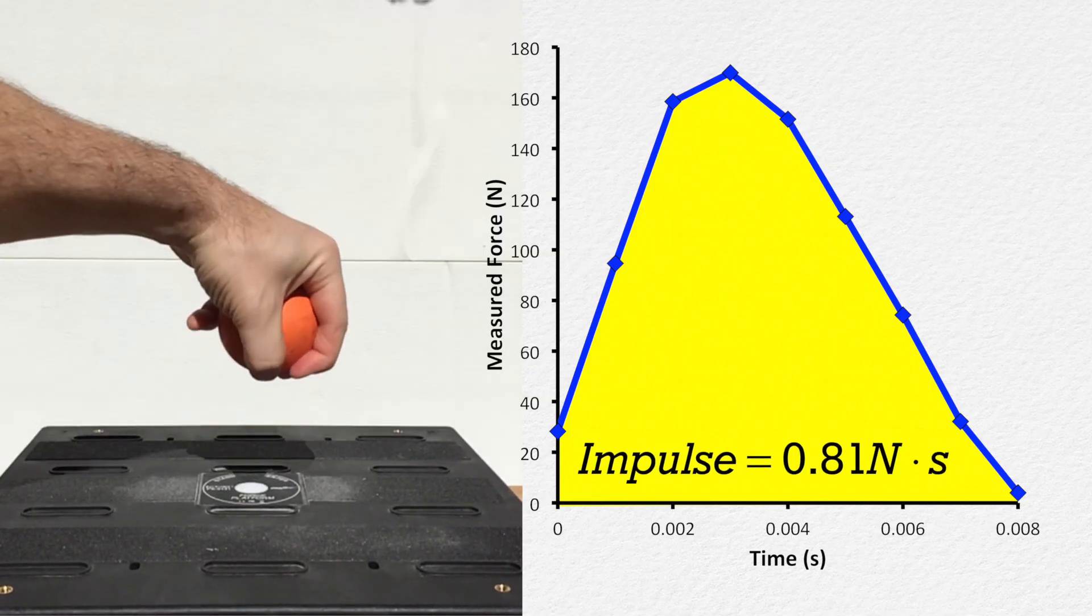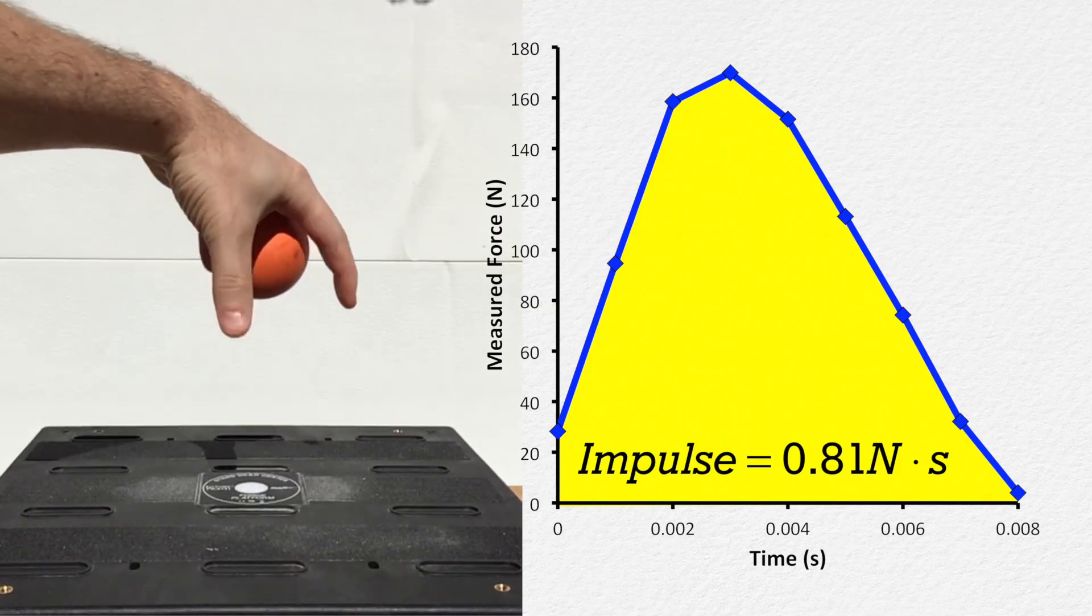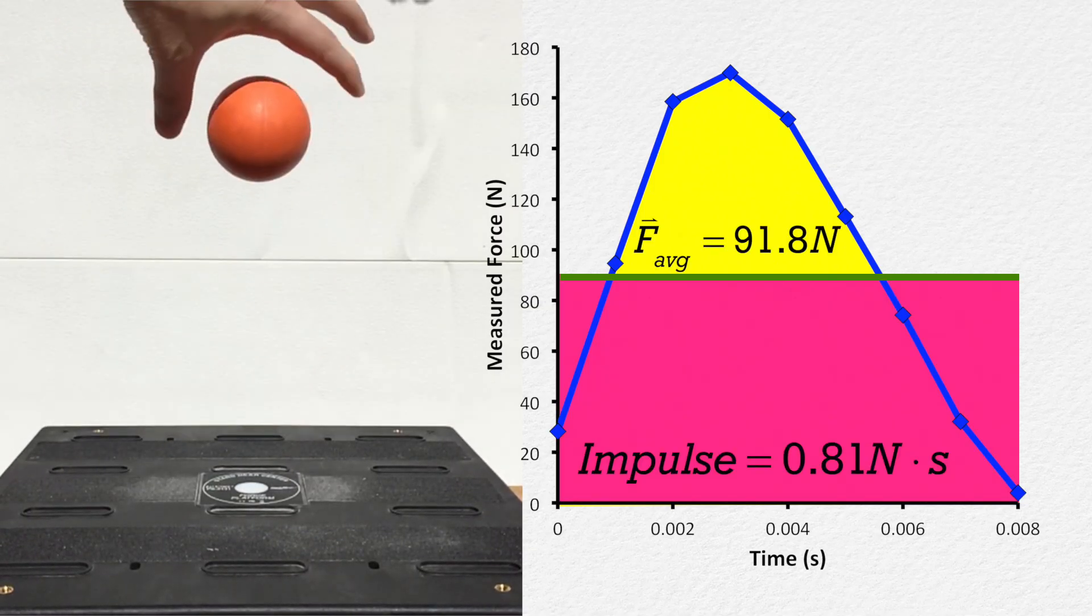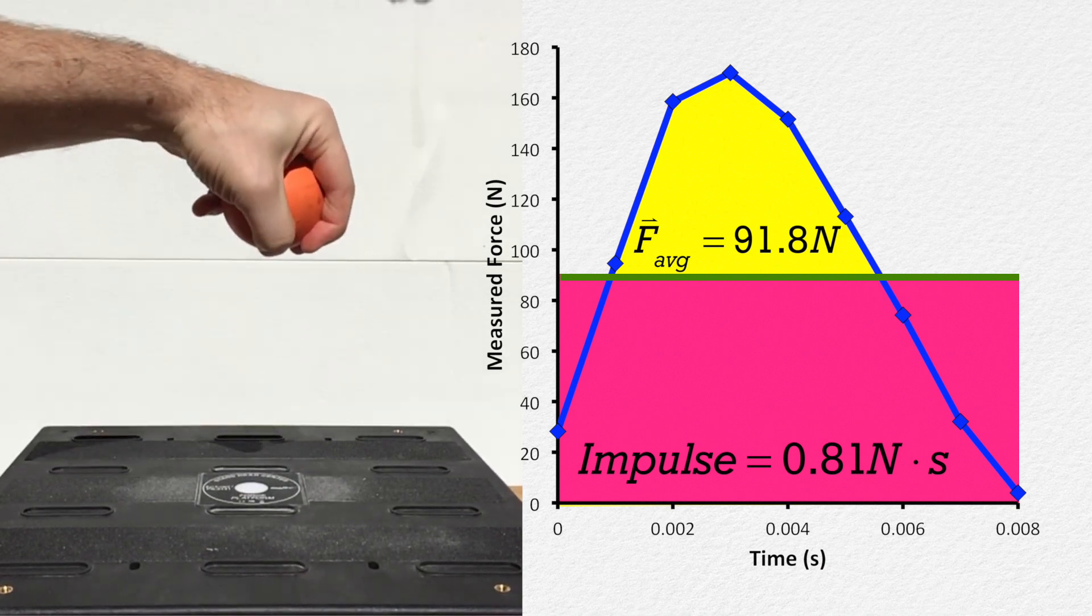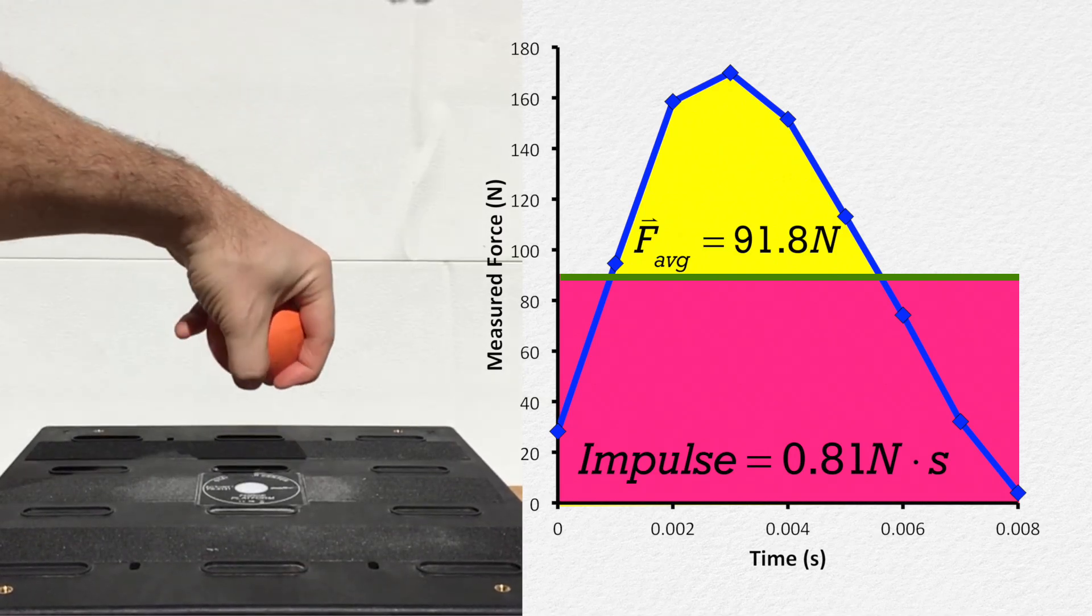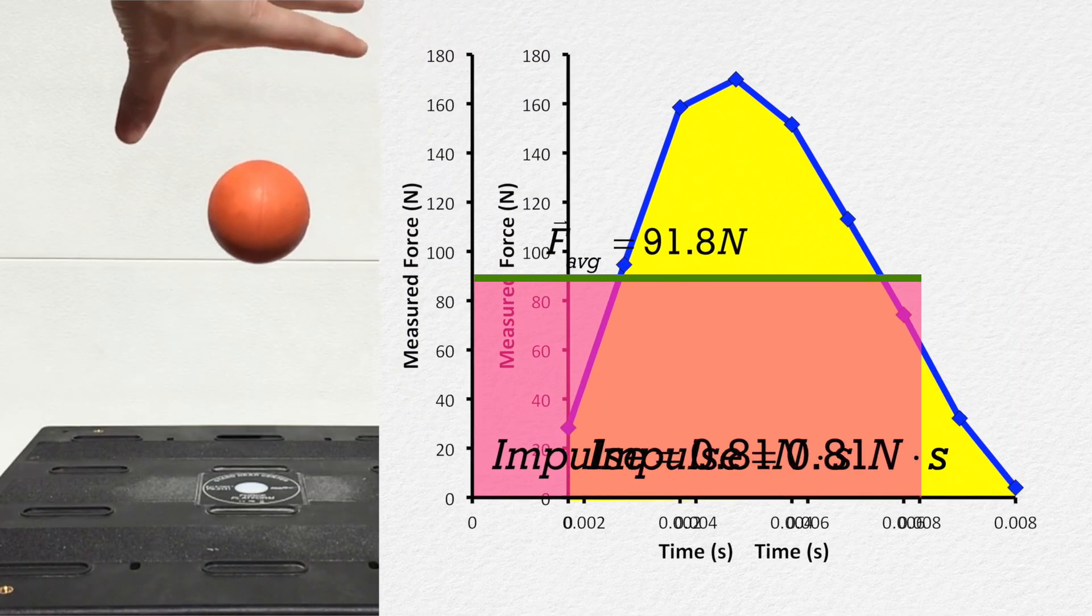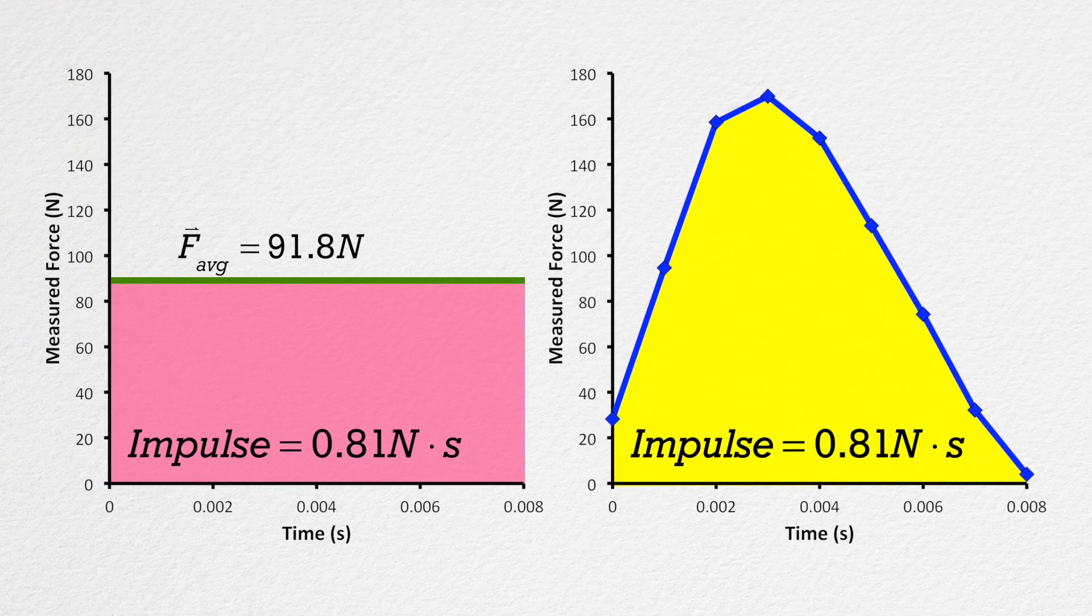In an algebra-based physics class like this one, we often approximate the force using an average force, and in pink, the rectangle created using the average force and the change in time during the collision has the same area, and is also equal to the impulse during the collision. Let me say that again to make sure it is clear. The area in yellow and the area in pink have the same value, 0.81 newton-seconds.